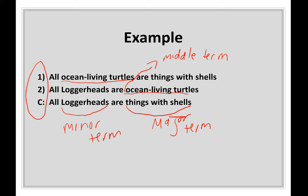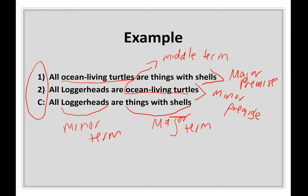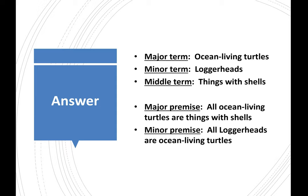Now label the premises. The major term is 'things with shells,' so look at which premise mentions that — premise one. That's your major premise. The minor term is 'loggerheads,' so that's your minor premise. Every complete categorical syllogism is going to have a major premise, a minor premise, and a conclusion.